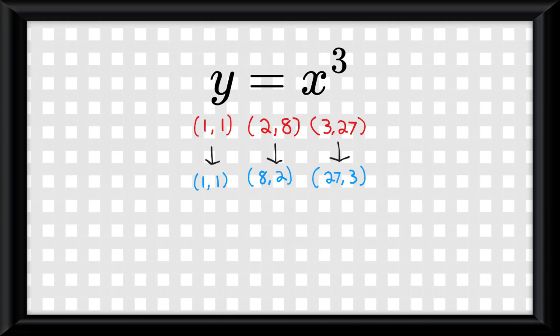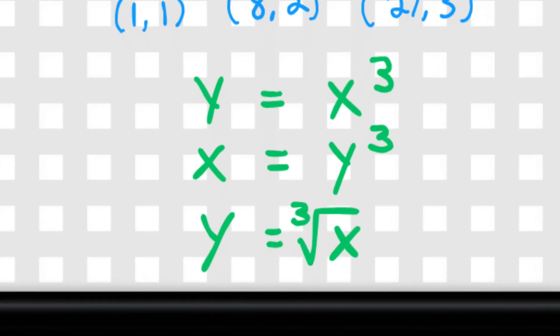To find the inverse function equation, you would take the original function, in this case y equals x cubed, and you swap the x and the y and solve for y, and that's the inverse function.